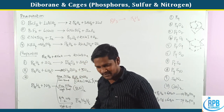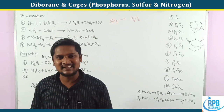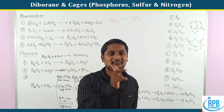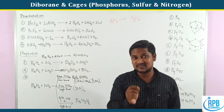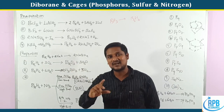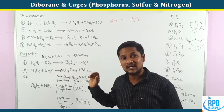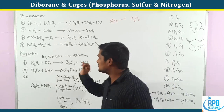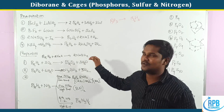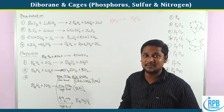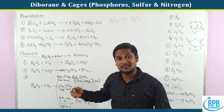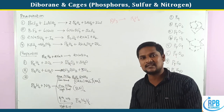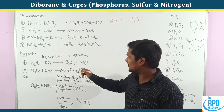Now properties of diborane. This is from the 2019 December CSIR question. B2H6 reacting with oxygen: diborane-oxygen reaction. Also, diborane reacting with water gives boric acid and hydrogen. Diborane reacted with water — anhydrous water — gives boric acid and hydrogen.